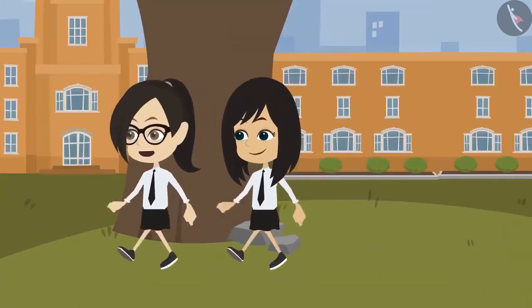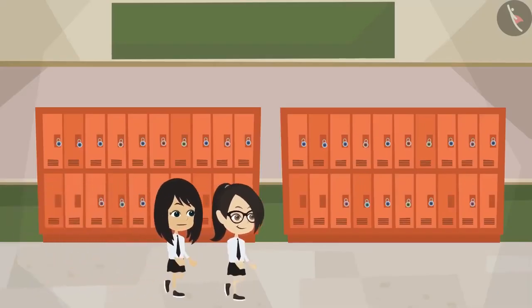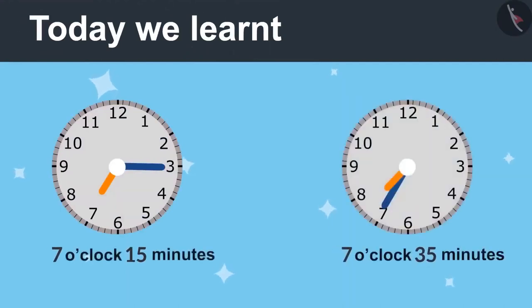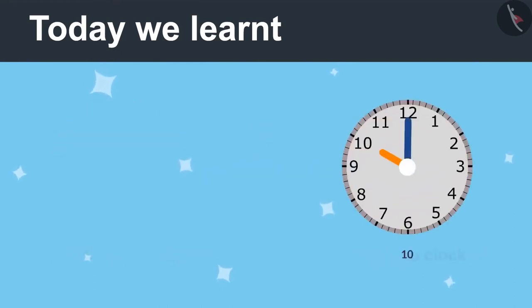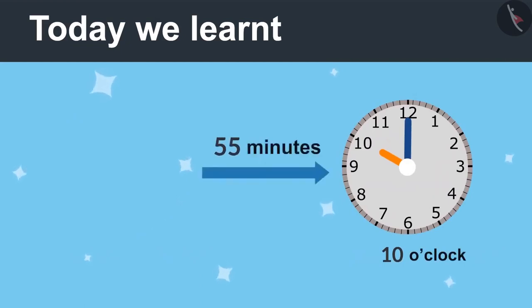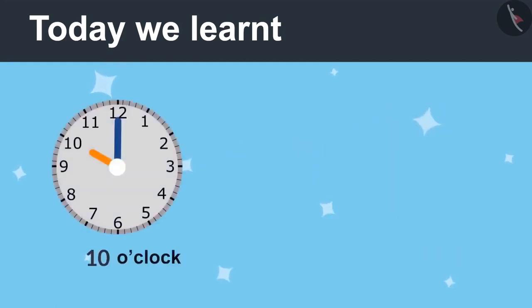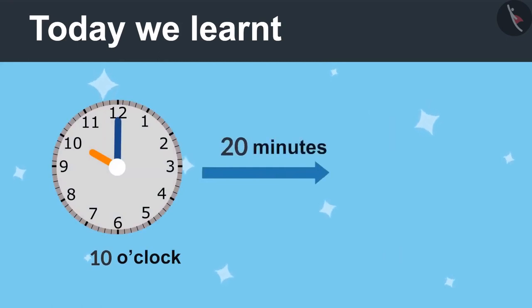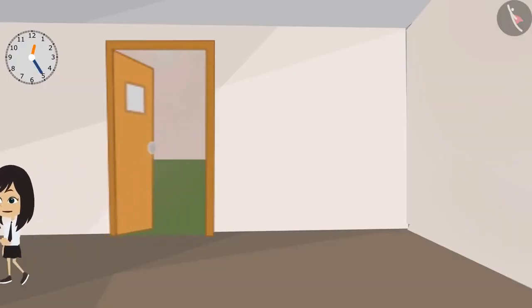We calculated three things related to time. First, we were given the start time and end time — we found out how long it would take. After that, we knew the end time and how long it takes — through that we found out the start time. And lastly, we knew the start time and the time it would take to complete the work — with that we found out the end time of the job.